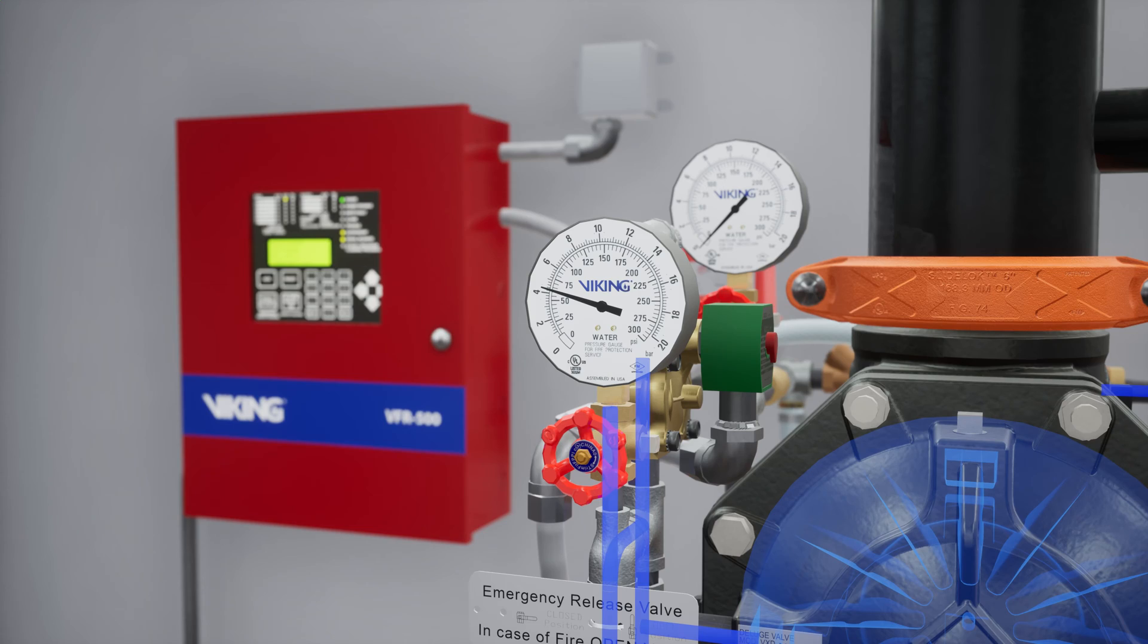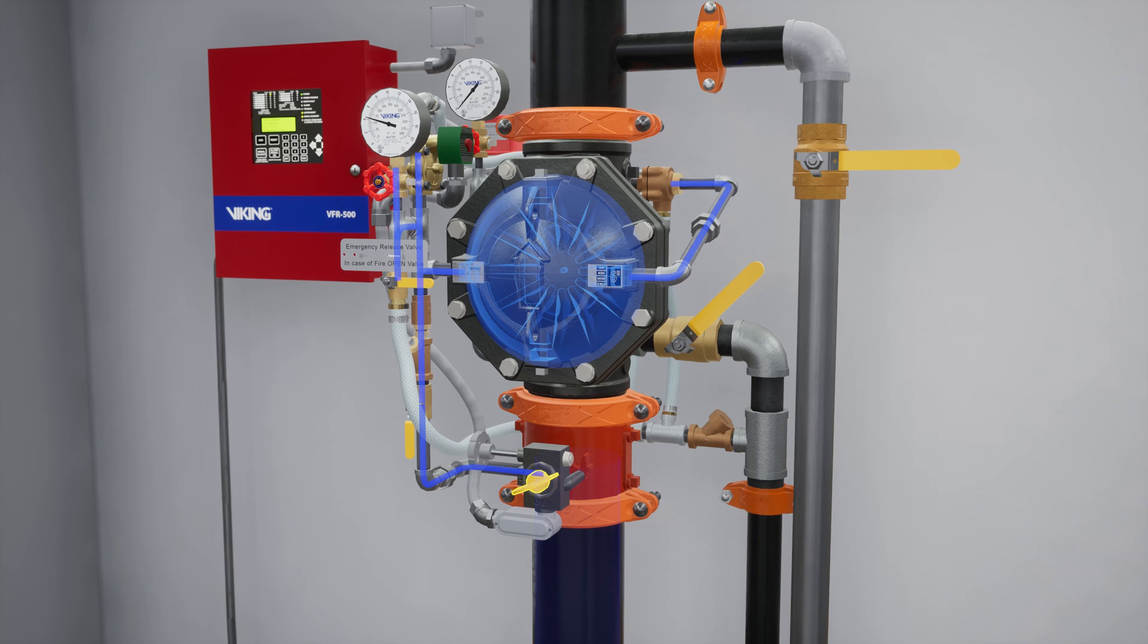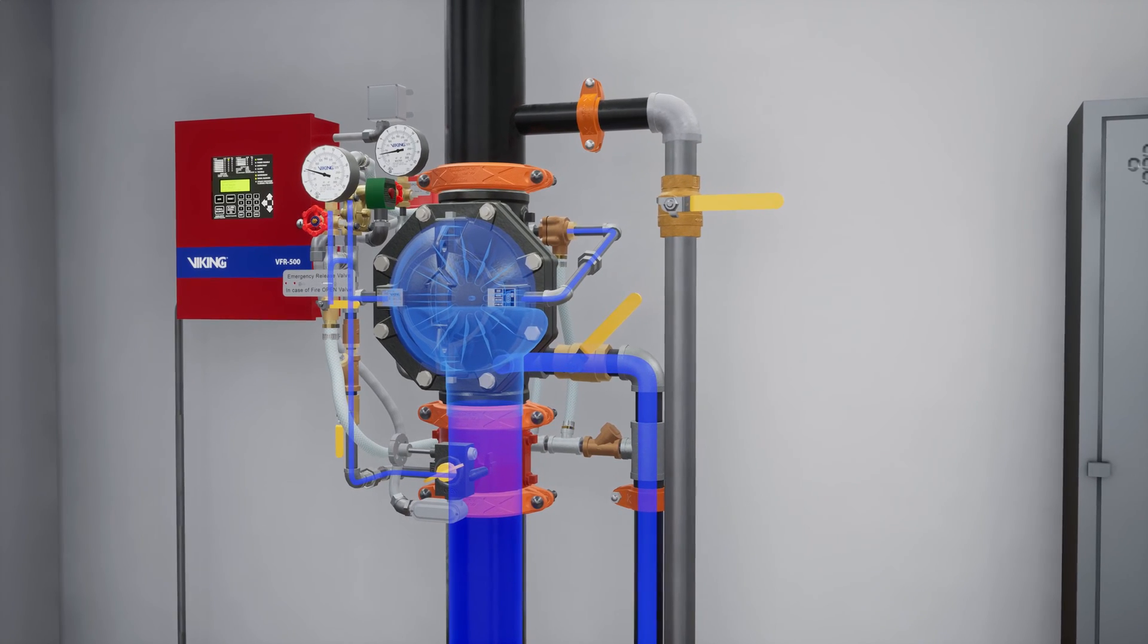Slightly open the water supply control valve and begin introducing water into the system. Once flow has been established, close the flow test valve.